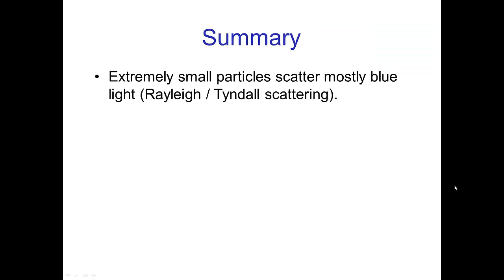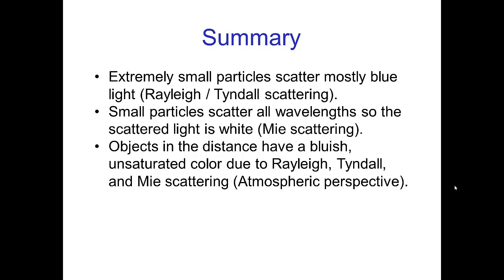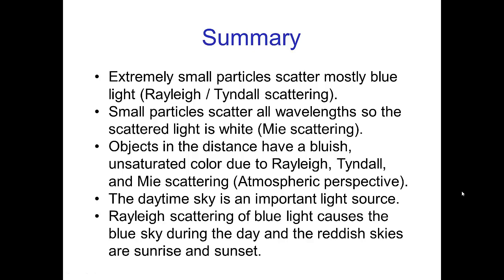In summary: extremely small particles scatter mostly blue light — this is known as Rayleigh or Tyndall scattering. Small particles scatter all wavelengths, so the scattered light looks white — this is Mie scattering. Objects in the distance have a bluish, unsaturated color due to Rayleigh, Tyndall, and Mie scattering — this is atmospheric perspective. Under water or in space the effects are somewhat different. The daytime sky is an important light source, perhaps not fully appreciated. Rayleigh scattering of blue light causes the blue sky during the day and the reddish skies at sunrise and sunset. We'll see more about scattering in part two.